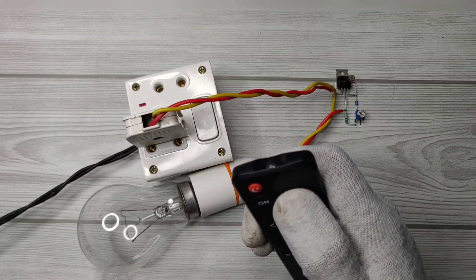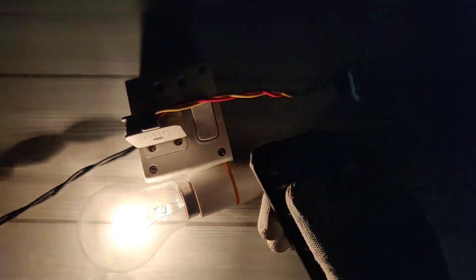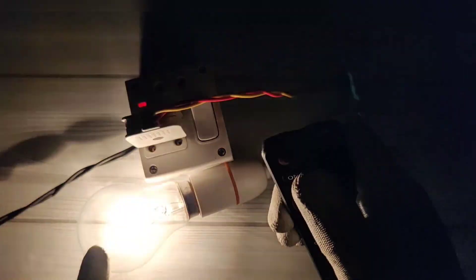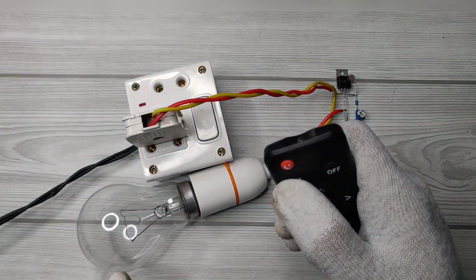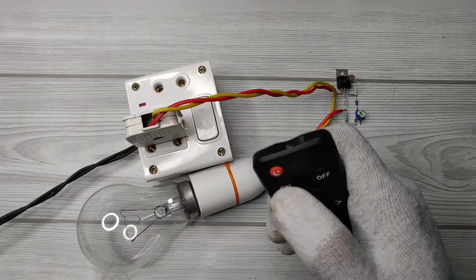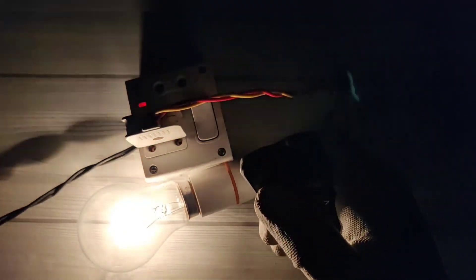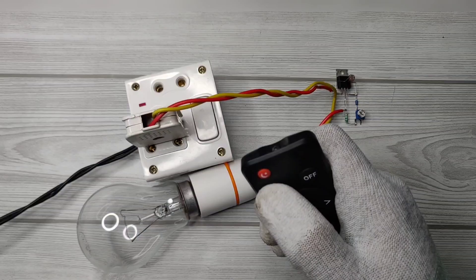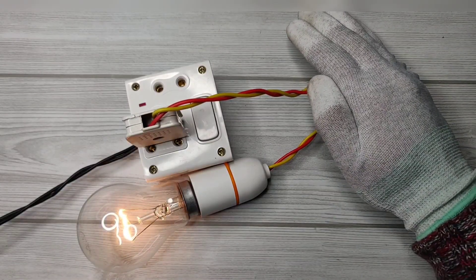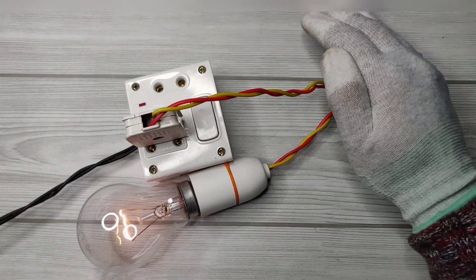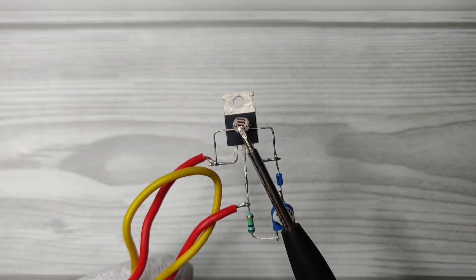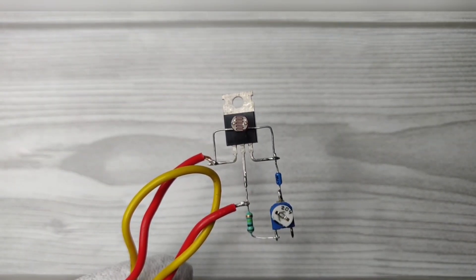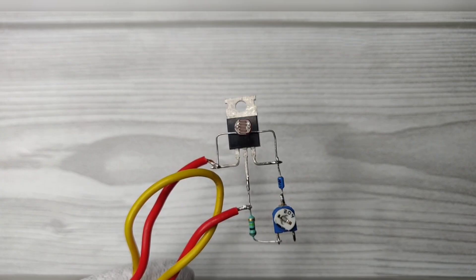As I turned off the room light, bulb turned on. And as I turned on the room light, bulb automatically turned off. So this automatic LDR circuit can be easily used for outdoor and street lighting purposes.